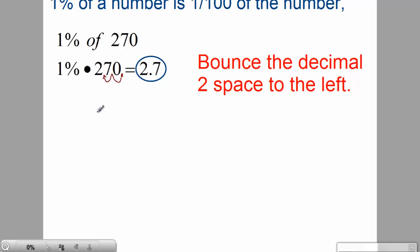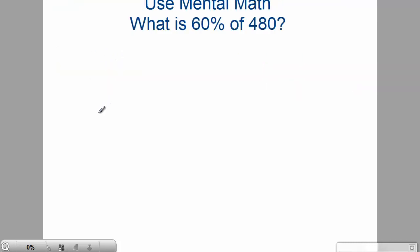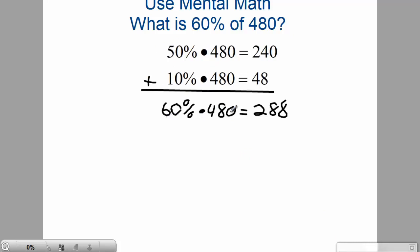We're going to use mental math and find out what 60% of 480 is. One way we could do it: 50% of 480 equals 240 because that's half, and then 10% of 480 equals 48 using that decimal balance rule. Then 50% plus 10% add them up, that's going to give us 60% of 480. Add these up: 288.